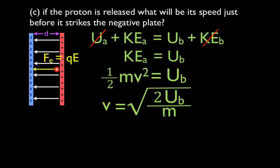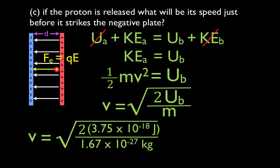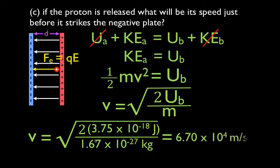Rearranging, the velocity equals the square root of 2 times the potential energy divided by the mass. We multiply both sides by 2, divide by the mass, and take the square root. Plugging in 2 times 3.75×10⁻¹⁸ joules divided by the mass of a proton, we get that the velocity of the proton just before it strikes the plate is 6.7×10⁴ meters per second.